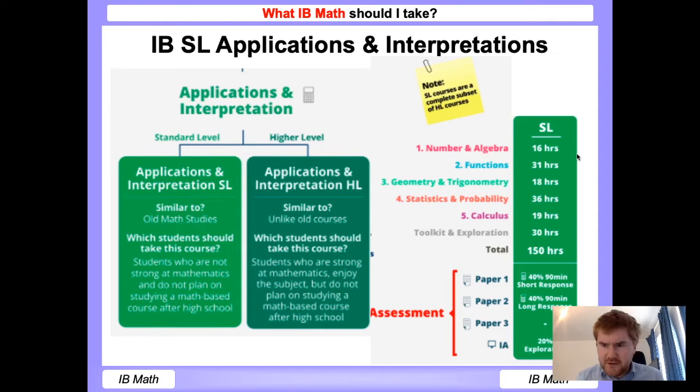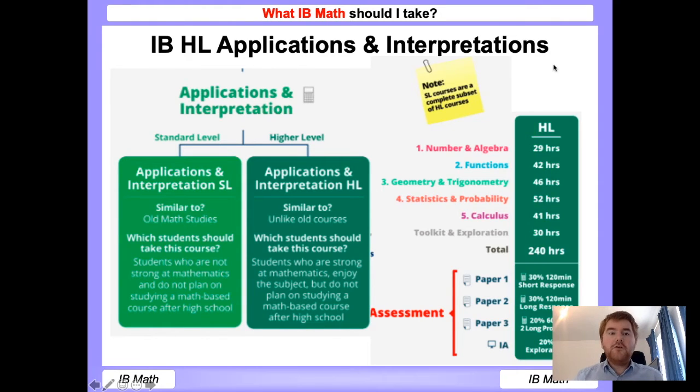In terms of paper one and paper two, you both have 90 minute papers. Paper one is short response, paper two is long response, and there's of course the coursework which is common to all four courses, which is worth 20%.